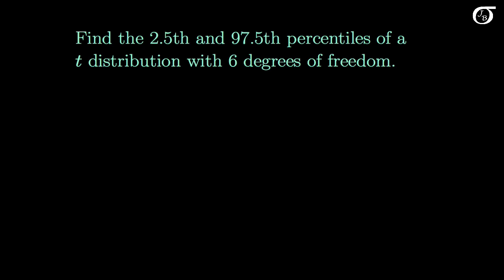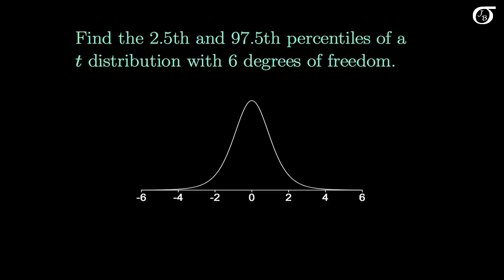The first thing we should do is plot the appropriate t-distribution and draw in what we're looking for. We can do this roughly by hand, but I'm going to give the exact distribution using software here. Here's a t-distribution with 6 degrees of freedom. By the definition of a percentile, the 2.5th percentile is the value of the variable that has an area to the left of 0.025 — somewhere roughly around there. We don't need to get it exactly right; we're just looking for a rough idea of where it is.